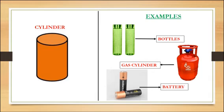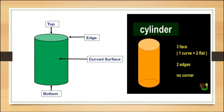Now let's learn the next shape: cylinder. Examples: bottles, gas cylinder, battery. Such a shape is called a cylindrical shape. Now let's see how many edges, corners, and faces it has. Cylinder has two edges but not a single corner.